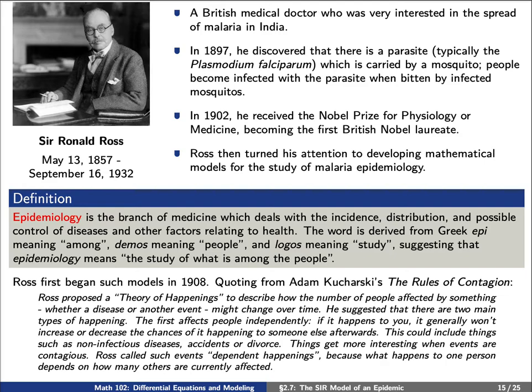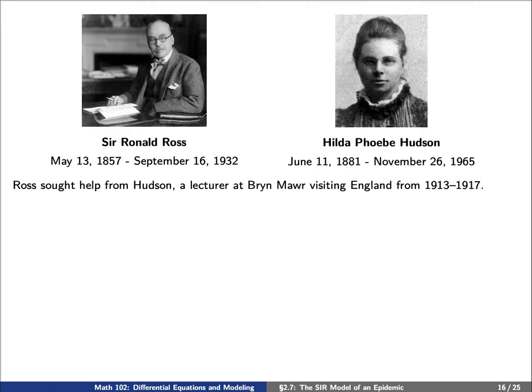Things get more interesting when events are contagious. Ross calls such events dependent happenings because what happens to one person depends on how many others are currently affected. Ross really wasn't a mathematician, so he sought the help of a mathematics professor. He worked with an English mathematician named Hilda Phoebe Hudson. She was a lecturer at Bryn Mawr at the time, but she was visiting England for about three years when she met Ross.